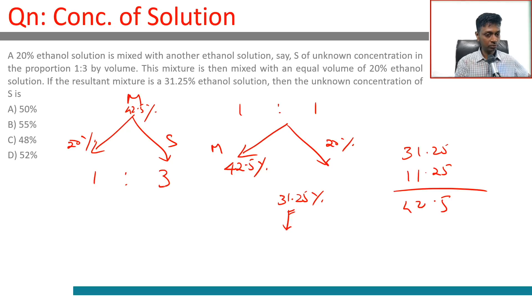3 takes us to 42.5%. Now we have an old-fashioned mixtures question in our hands. We are mixing a 20% solution and S and getting 42.5%. We are mixing these two in the ratio 1 is to 3. This